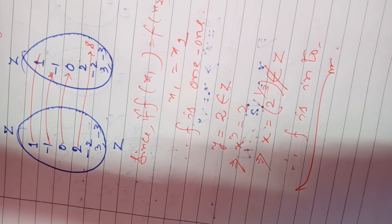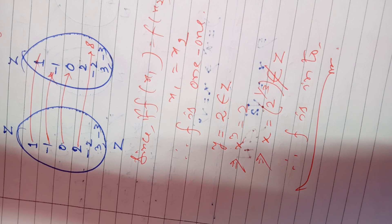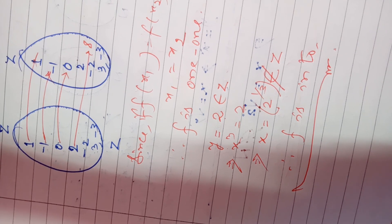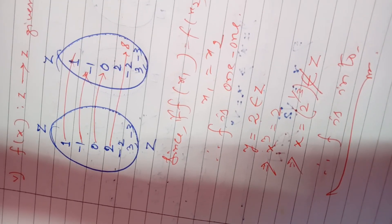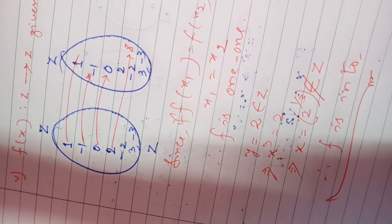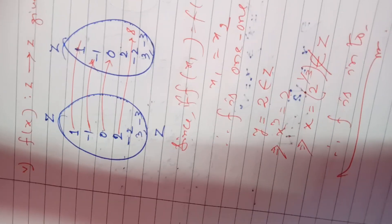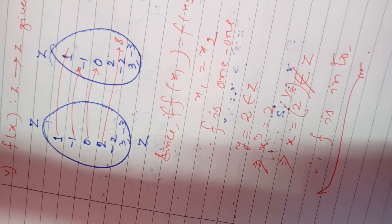To summarize: we have discussed how to check whether a function is injective, surjective, or bijective — onto or into — by working through these examples. So many questions related to this topic can be solved by learning from this question. Thank you.